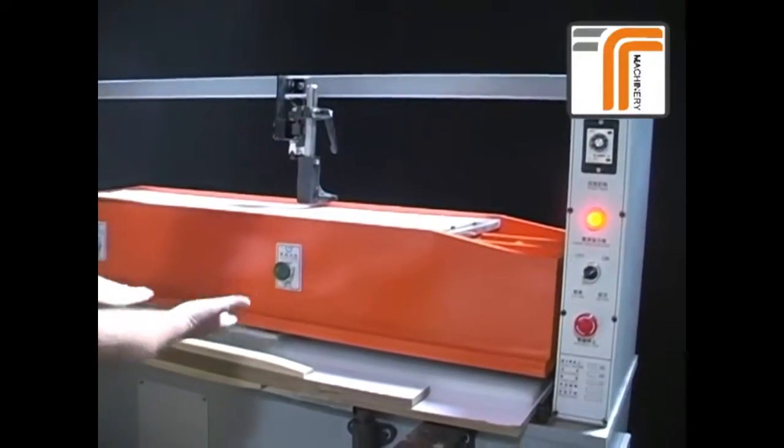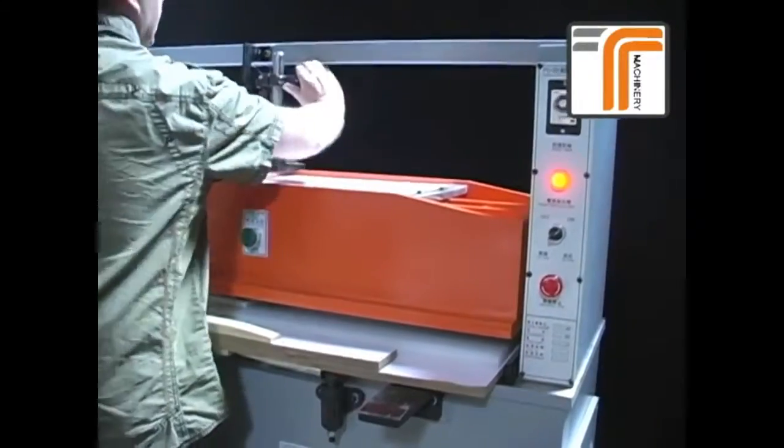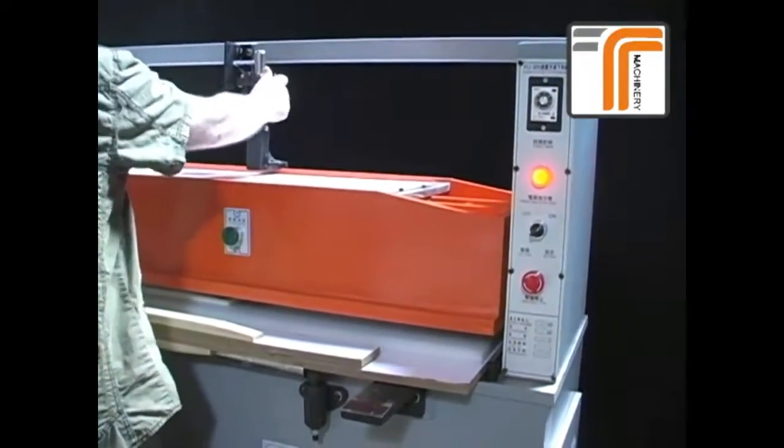It just goes down and kisses it. It touches it right there. At that point, you'll tighten the gauge.